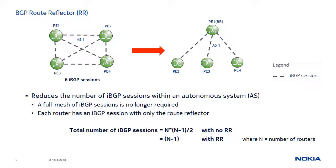A Route Reflector is used to reduce the number of iBGP sessions in an AS because each router is now required to have an iBGP session with only the RR. The AS on the right also includes 4 routers, but one of the routers acts as an RR. In this case the total number of iBGP sessions is reduced to 4 minus 1 equals 3.